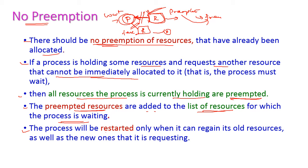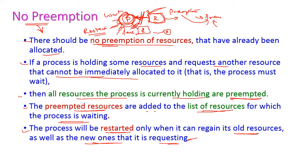The process will restart only when it can regain its old resources as well as the new one it is requesting. If it does not find the other resource, it immediately releases all the resources it is currently holding. Those resources are added to the free available resources and utilized by other processes. The process then waits and restarts to gain all its old and new resources. This is called no preemption, and we can easily overcome this no preemption condition in our system.